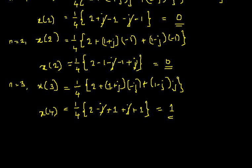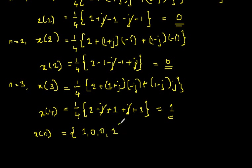Combining all samples, X of N equals {1, 0, 0, 1}. So finally, the IDFT of the sequence X of K is X of N = {1, 0, 0, 1}. This is the final answer. Hope everyone has understood it. If there are any doubts, please let me know in the comment section. Thanks for watching.